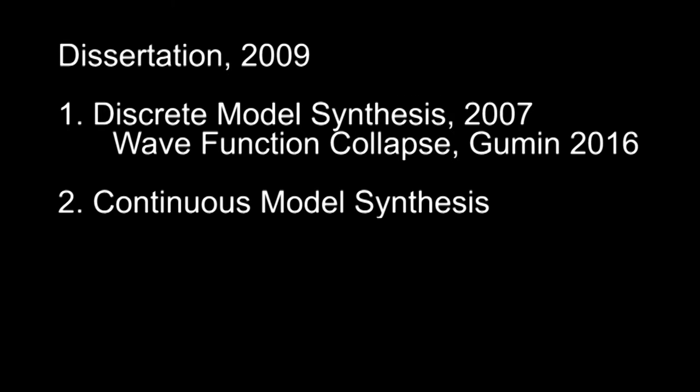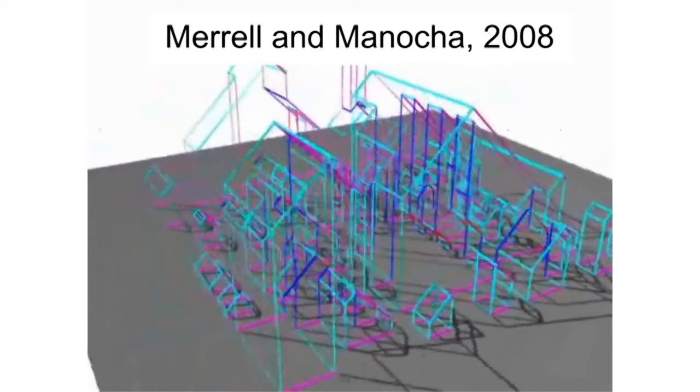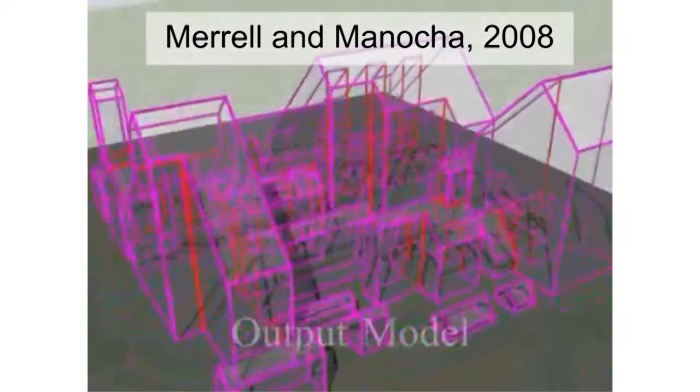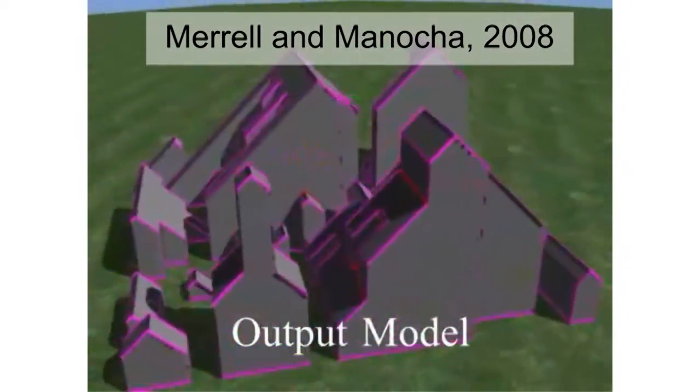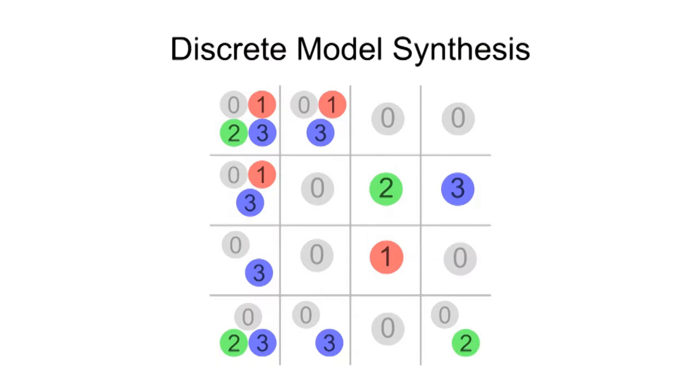The second half of my dissertation is on continuous model synthesis. I first presented this idea at SIGGRAPH Asia in 2008, and then I further developed it in a TVCG paper. The key difference between these two approaches is that discrete model synthesis does everything on a regular grid. There are some limitations when we try to do everything on a grid.